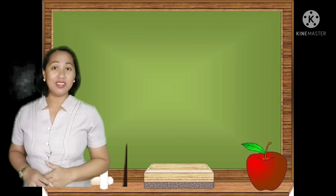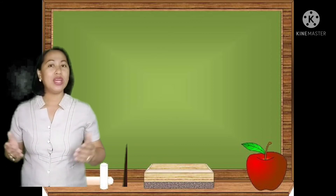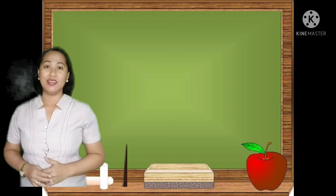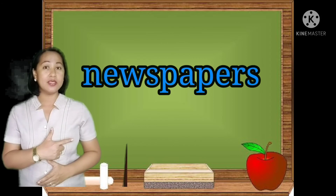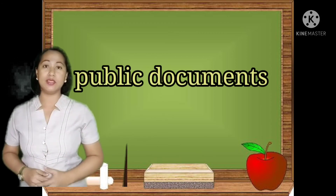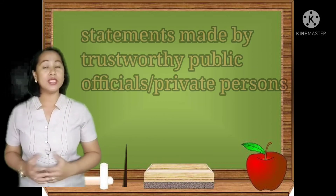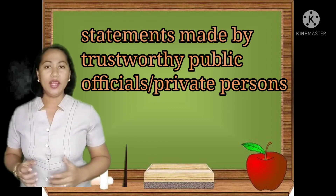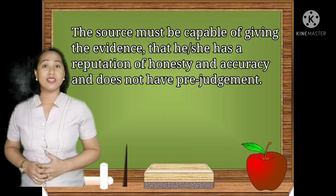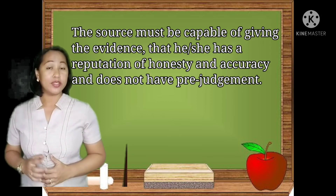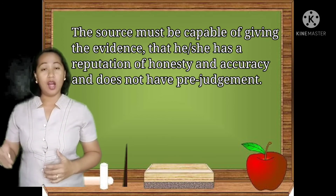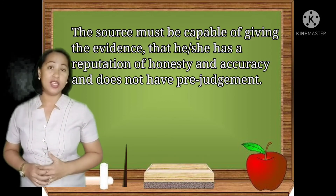Where do we get these pieces of evidence? When we use evidence in our arguments, make sure it comes from reliable sources. Possible sources of evidence are newspapers, magazines, official or public documents, historical papers, or statements made by trustworthy public officials or private persons. When you cite a person's statement as evidence, make sure that the person is capable of giving the evidence, has a reputation for honesty and accuracy, and does not have prejudgment.